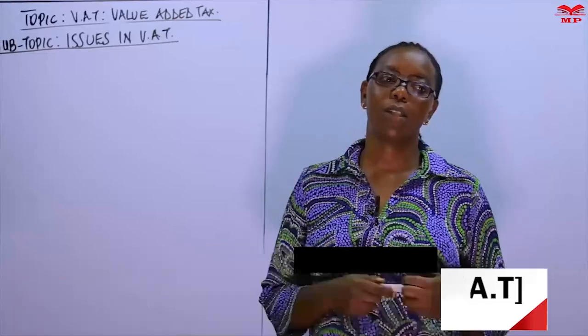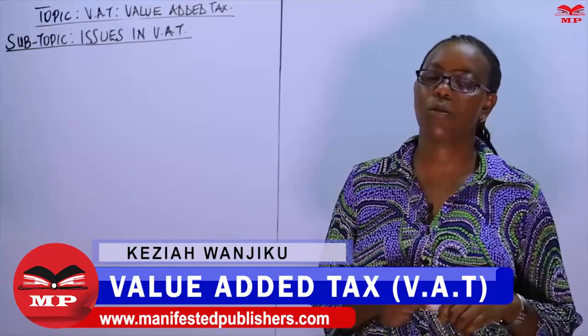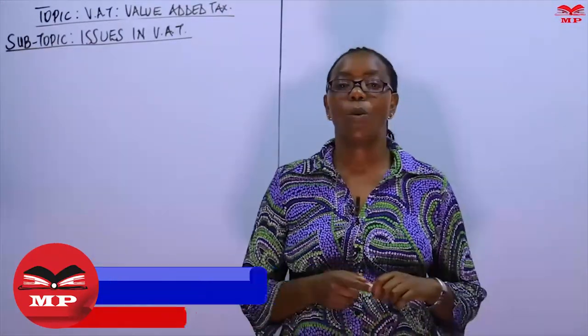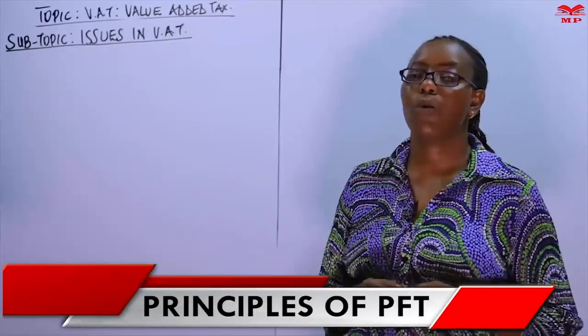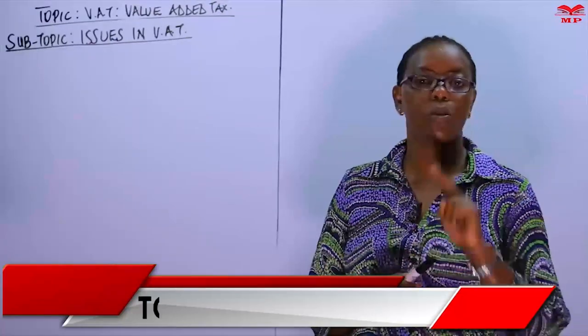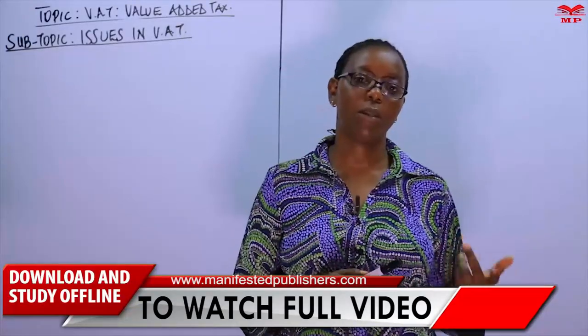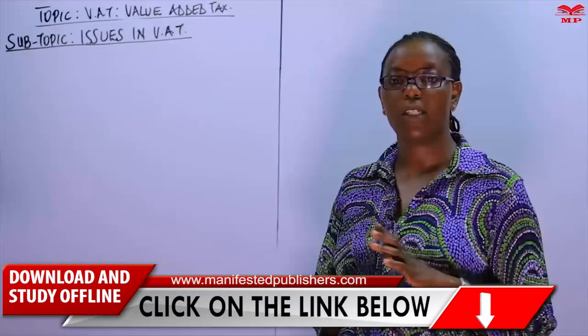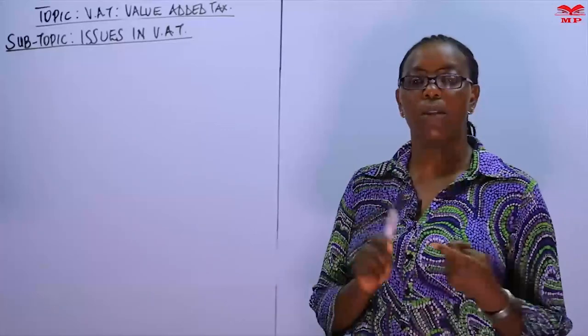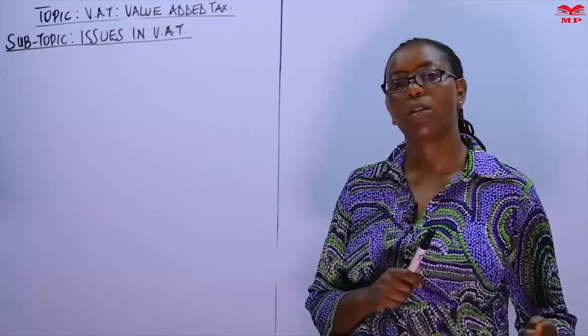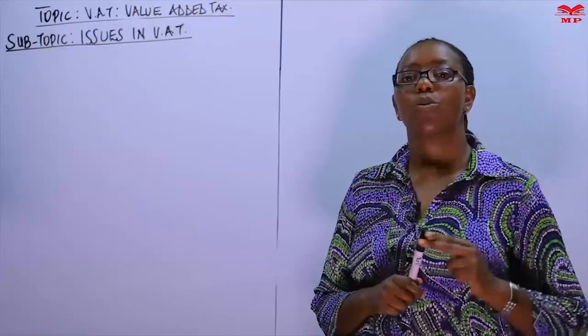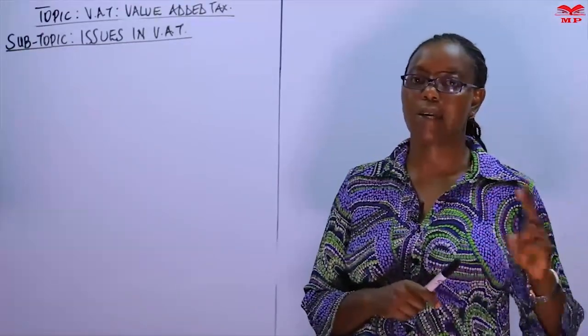In our previous lesson, we looked at computation of VAT for a firm that is selling at a price that is inclusive of VAT. When the prices are inclusive of VAT, you must know that the price you are charging the customer constitutes two aspects: one, the selling price of the business as determined by the business, and two, the VAT of 16%. A business will be required to quote prices inclusive of VAT under two circumstances: when the business is selling to unregistered persons, and when it is selling to the final consumer or when the business is a retailer like a supermarket.